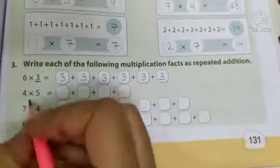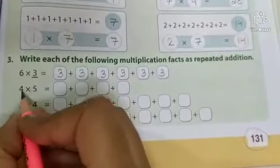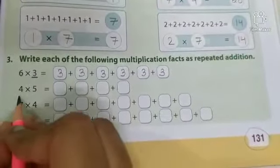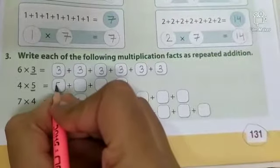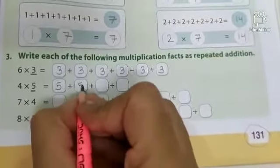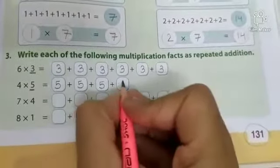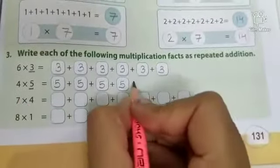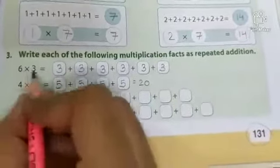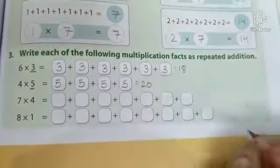Now next, 4 into 5. 4, 5. So 4 times 5. So we have to write 4 times 5. 1, 2, 3, 4. Okay? So 4 fives are 20. And 6 threes are 18.